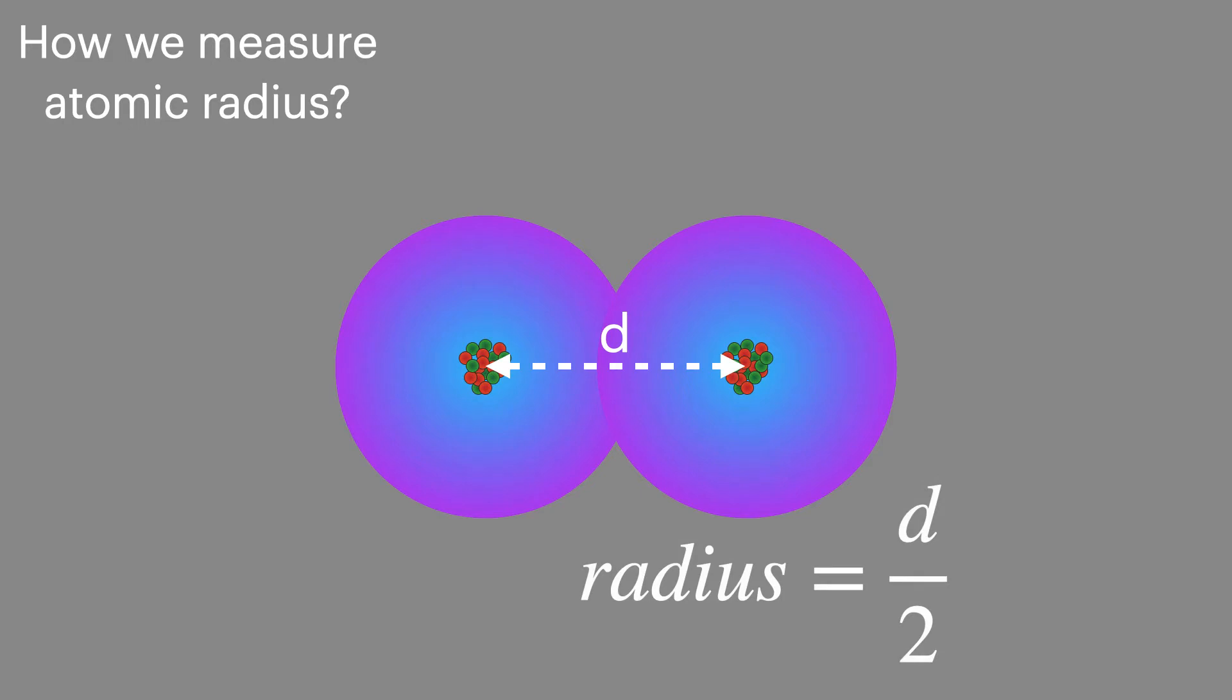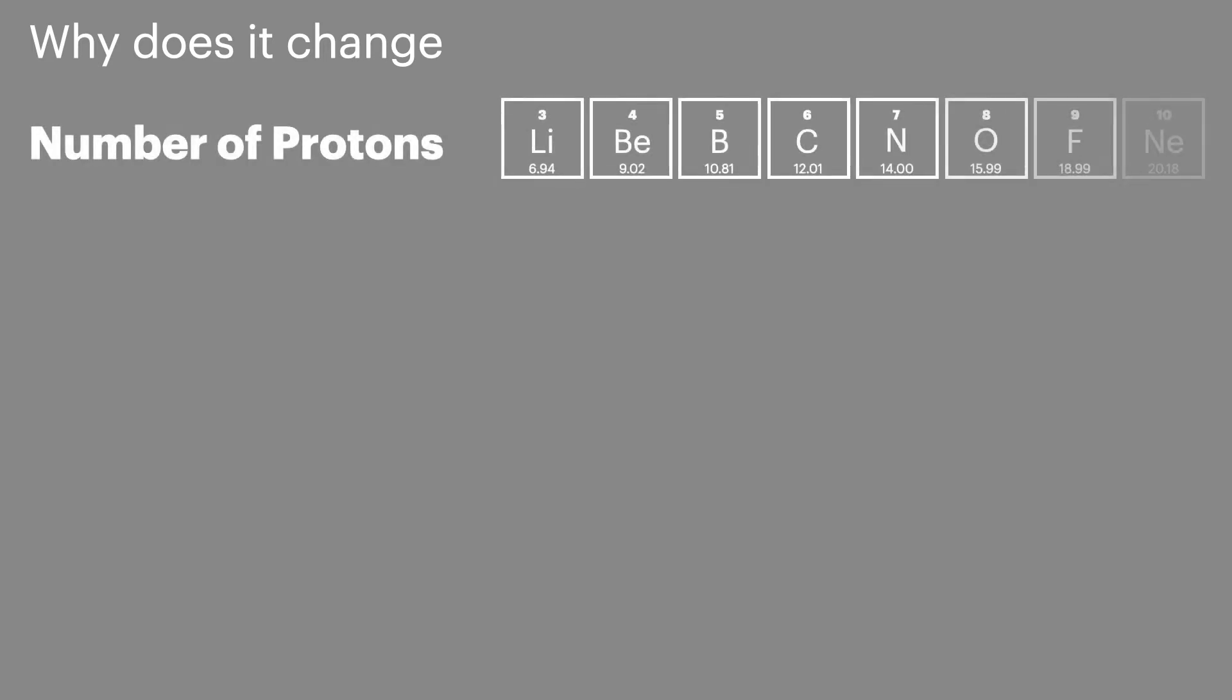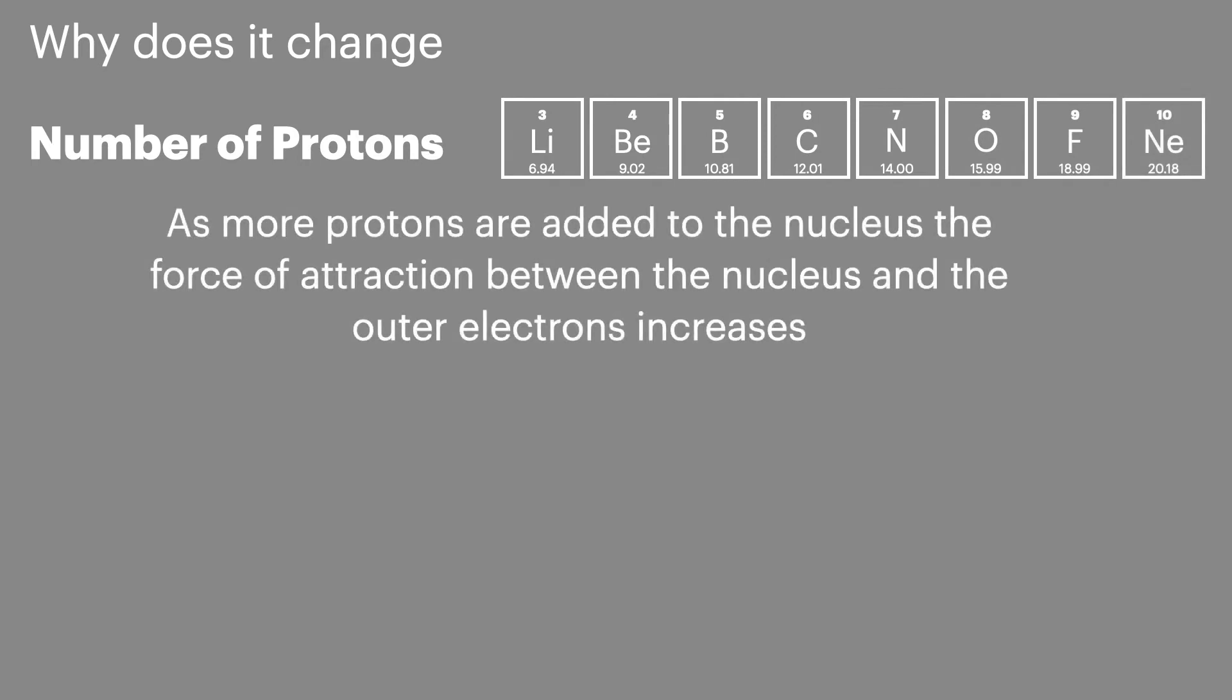This can be referred to as the covalent radius or the bonded radius. So we're now going to unpack why the atomic radius changes and what patterns or trends we can see on the periodic table. As the number of protons increases, the force of attraction between the nucleus and those outer electrons increases and this pulls them closer to the nucleus and reduces the atomic radius.